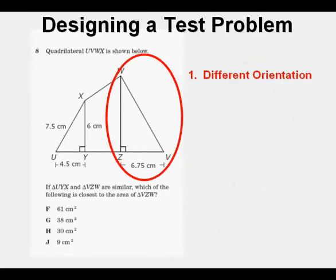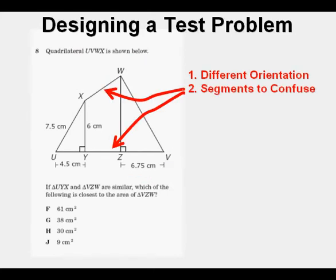Now let's look at our original problem. First, the triangles are oriented differently. Even though similar, the larger triangle on the right is flipped horizontally from the one on the left. Secondly, there are these two line segments to confuse the issue by making these two triangles part of a larger quadrilateral.